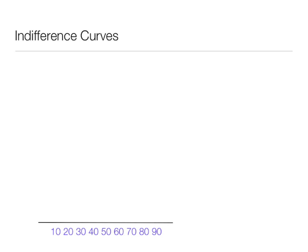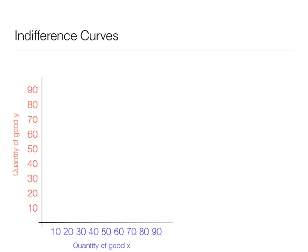Along the x-axis we plot quantity of good x. Along the y-axis we plot quantity of good y. Again what we do is we say that utility is a function of the consumption of two goods x and y.